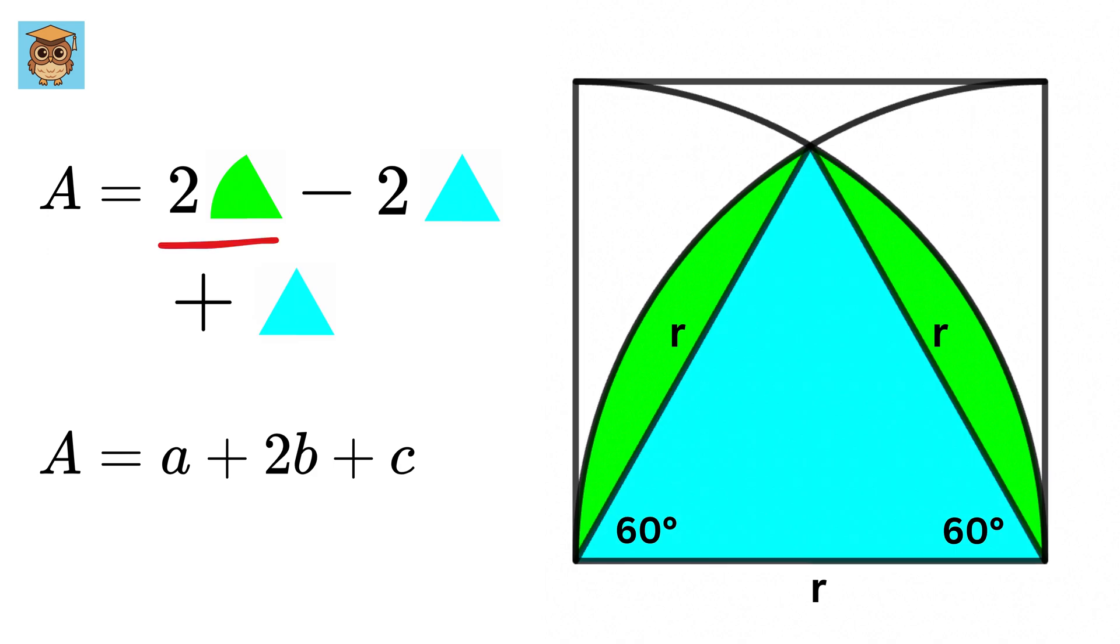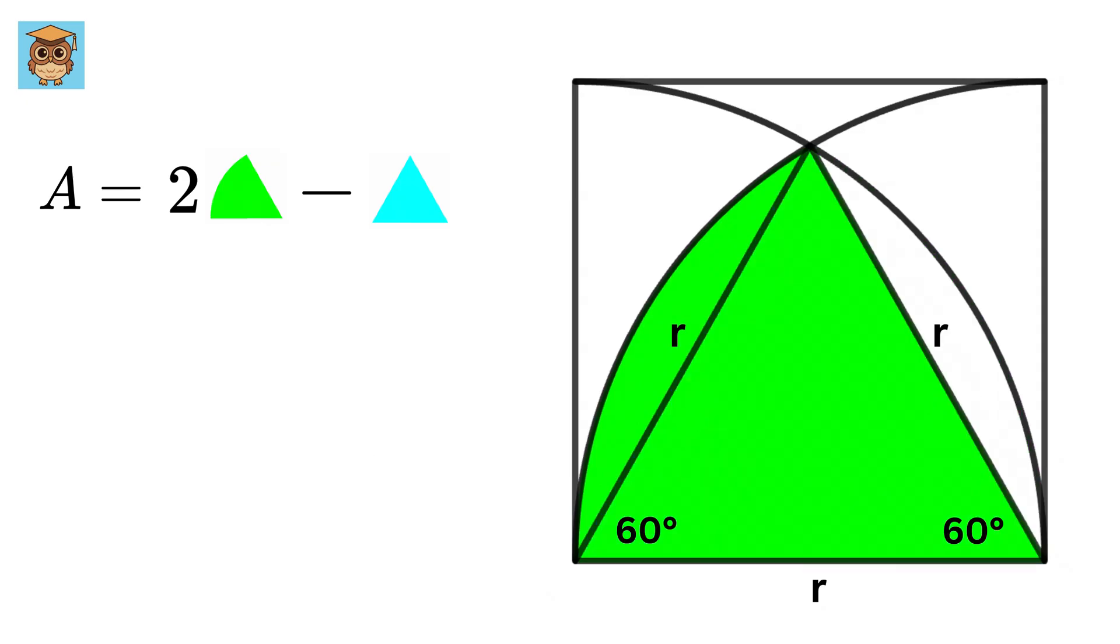Or 2 times the area of this sector minus the area of this equilateral triangle. Look at this sector of the circle. Its area will be 60 over 360 times pi r-square, or pi r-square by 6. And the area of this equilateral triangle will be root 3 over 4 times r-square.